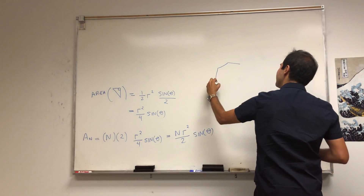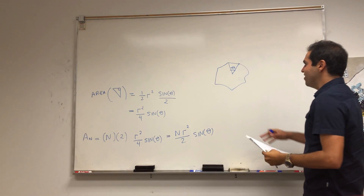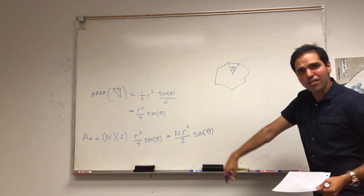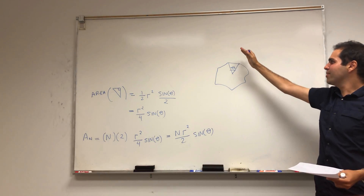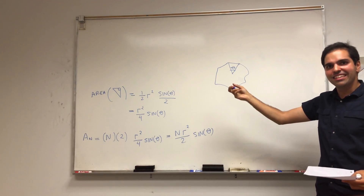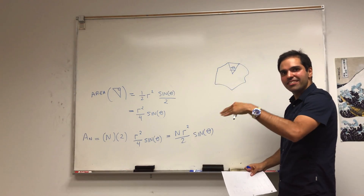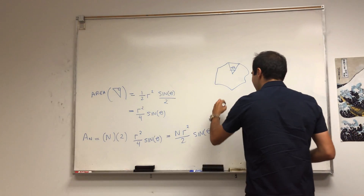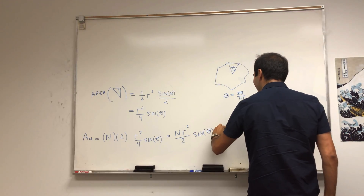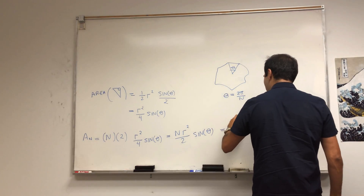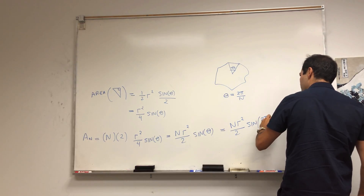Now, what is θ? The whole revolution is 2π and we cut it into n pieces, so each angle is 2π/n. If we cut into three pieces it's 2π/3. So θ = 2π/n — tau aficionados can say it's τ/n. Therefore A_n = n·r²/2 · sin(2π/n).